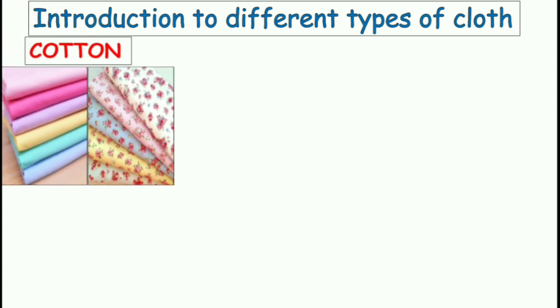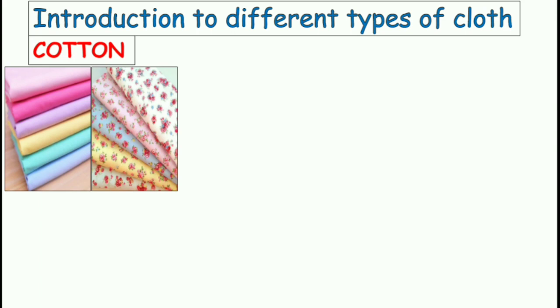The first one you can see here is the cotton cloth or cotton material. There are two types of cotton material: one is the self-coloured and one is the printed one. You can see some small flowers on them.